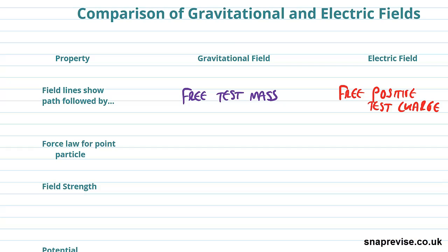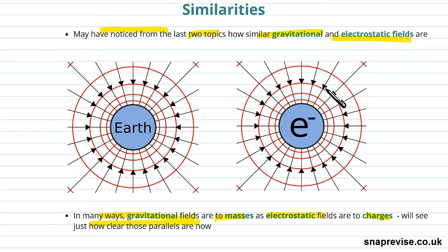Remember, test just means it's small enough that it doesn't itself affect the field that it's moving through, doesn't cause the actual thing that's generating the field to move. For an electric field it's exactly the same, but we have to be clear it's a positive test charge. The arrows here show you the path that a positive test charge will follow, not a negative test charge, it's actually the opposite for that.